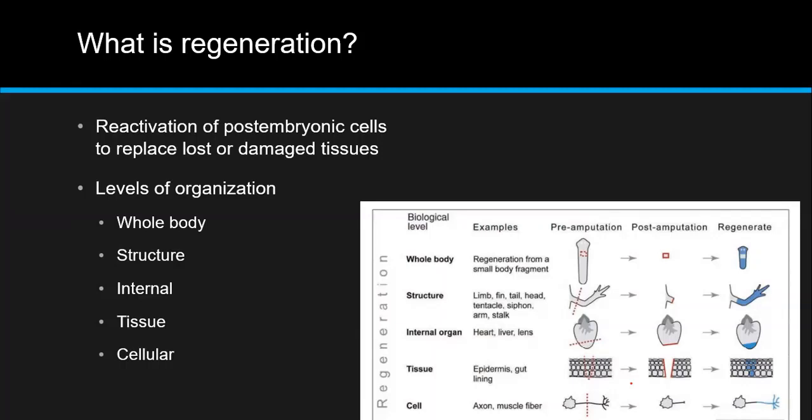There can be whole cell regeneration, which would occur in simpler organisms like planarians. There's also structural regeneration where limbs can be regenerated like in axolotls. There's internal organ regeneration, which we might be more familiar with because humans can regenerate their livers. And there's also tissue regeneration, which is very common in humans, specifically our skin. And there's even cellular regeneration that can happen in axons and muscle fibers.